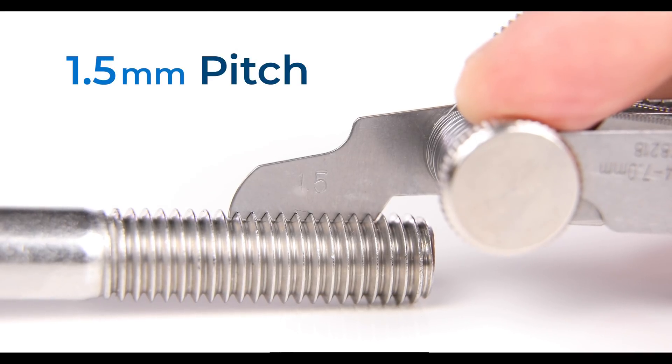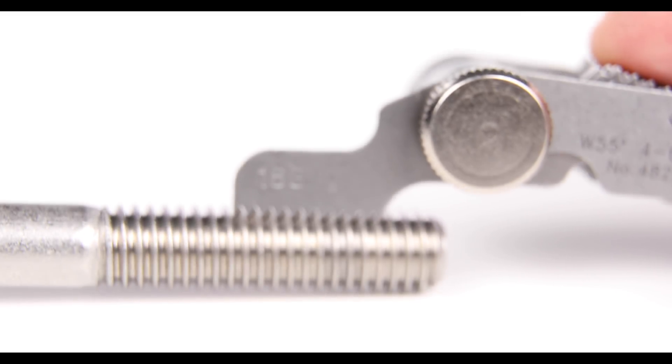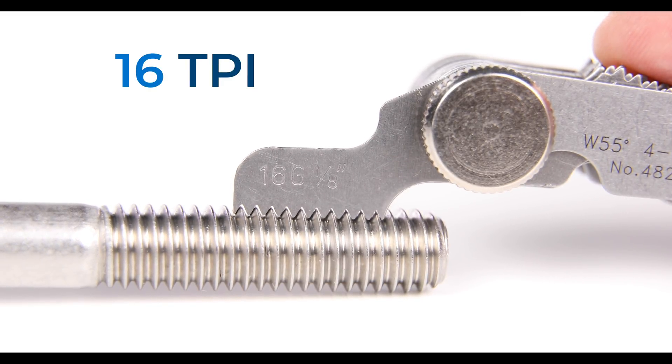So with this metric screw, we can see that it has a pitch of 1.5 millimeters. And with this imperial screw, we can see it has a TPI of 16.